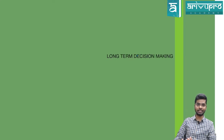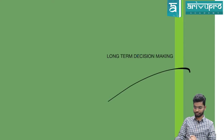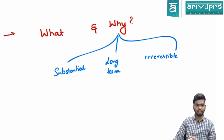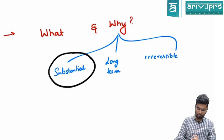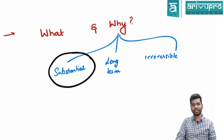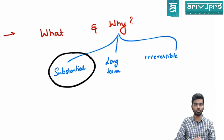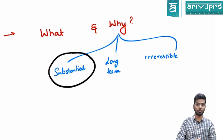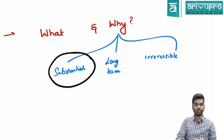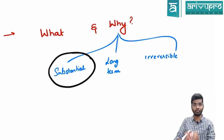First, let us understand what long-term decision making is and why it is important. The first characteristic is that it requires a substantial amount of funding. For example, you are trying to build a factory, expand into a new market, buy new machinery, build a flyover, or build a building — the amount required is huge.